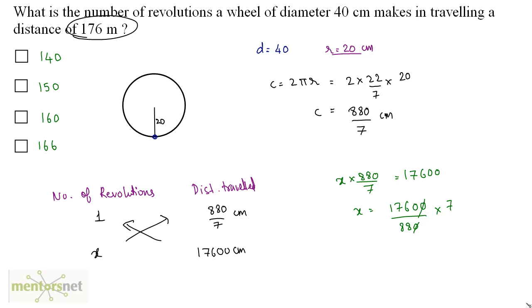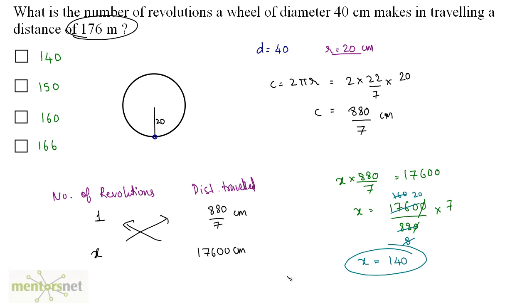The zeros cancel out. 1760 divided by 11 gives 160, and 88 divided by 11 gives 8, and 8 times 20 is 160. So we have x equal to 7 times 20, that is 140. So the total number of revolutions is 140. Option A.